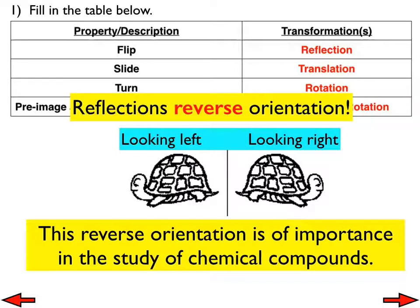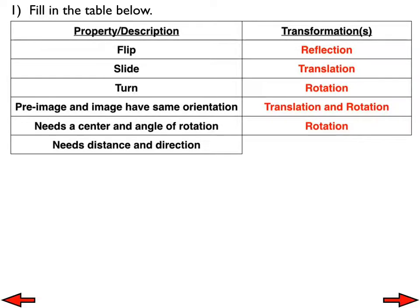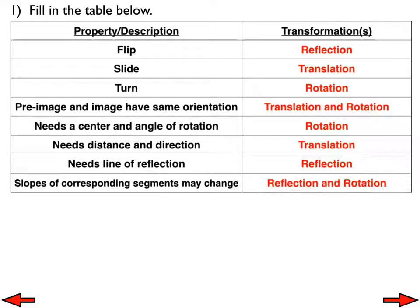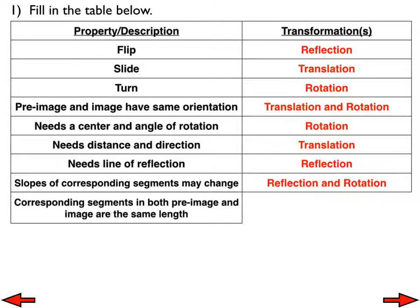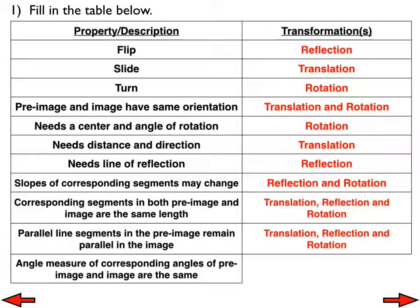Let's go through the rest of the table. 'Needs a center and an angle of rotation' — that's a rotation. 'Needs distance and direction' — that's a translation; think of a coordinate rule like 'move left 3 and down 5.' 'Needs a line of reflection' — that's a reflection. 'Slopes of corresponding segments may change' — that's reflection and rotation; in a translation, the slopes stay the same. 'Corresponding segments in both pre-image and image are the same length' — that's all of them. 'Parallel line segments in the pre-image remain parallel in the image' — all of them. 'Angle measures of corresponding angles of pre-image and image are the same' — all of them.